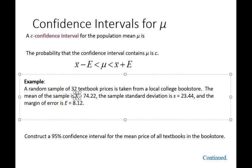so we're plus or minus $8.12 around the point estimate of $74.22. The confidence interval C for population mu is the probability that the confidence interval contains the actual population mean, represented as x bar minus E is less than mu, and x bar plus E is the upper bound. We have the lower bound and the upper bound with the middle containing the actual population parameter.